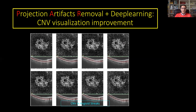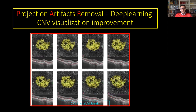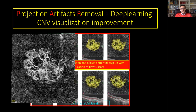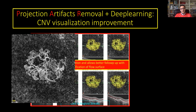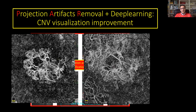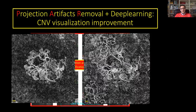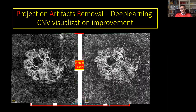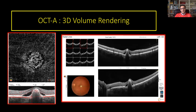Thanks to projection artifact removal and deep learning, there is improved visualization during anti-VEGF therapy to analyze the flow surface and the changes during therapy, and to analyze the recurrence of new vessels. Another interesting pathway is 3D volume rendering.